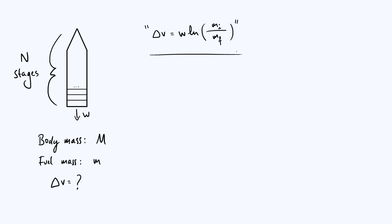Our starting point is this equation which I derived in my last video, which basically says that the gain in speed when the rocket burns fuel such that its mass changes from m_i (initial mass) to m_f is given by w times the natural log of m_i over m_f, where w is just the exhaust velocity. We're going to apply this equation n times and add together all of our individual delta V's to find our final speed boost.